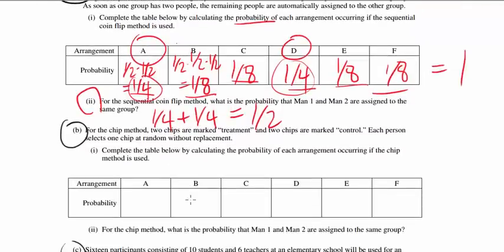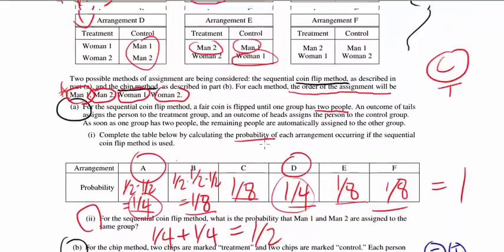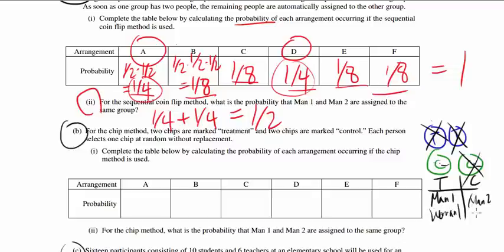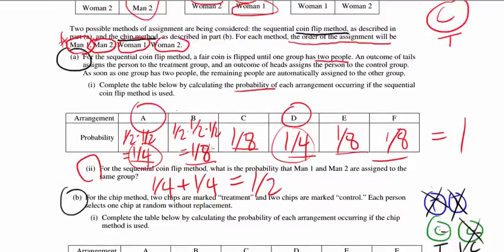Now let's look at part B — the same question but using the chip method. For the chip method, two chips are marked treatment and two chips are marked control. Each person selects one chip without replacement. So man 1 comes in first and picks one chip — say he picks treatment. Then man 2 comes in and picks one of the remaining chips. It's more likely man 2 picks control given man 1 picked treatment. Woman 1 picks next, and woman 2 is automatically put into the last remaining group.